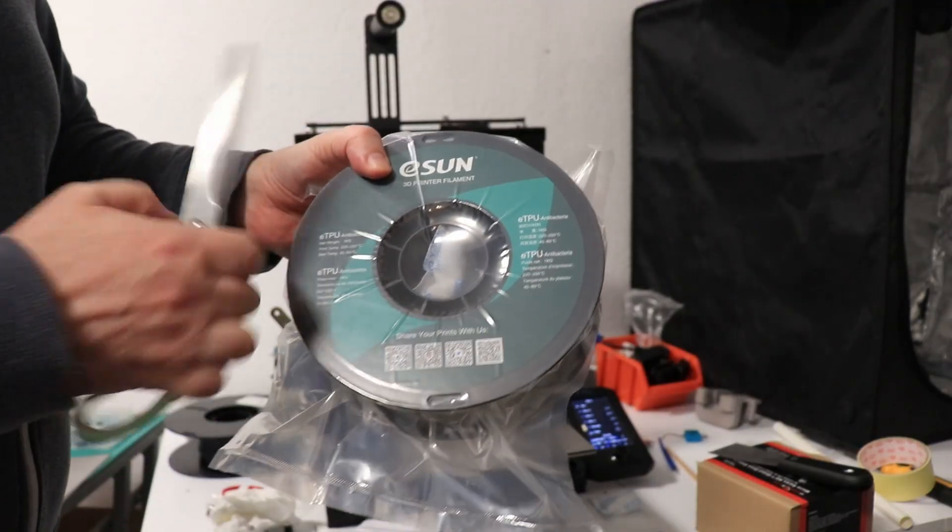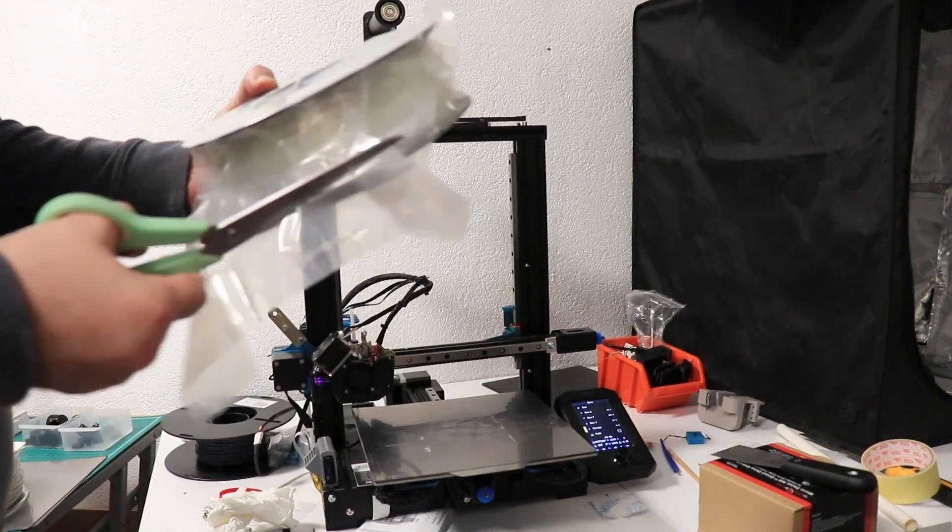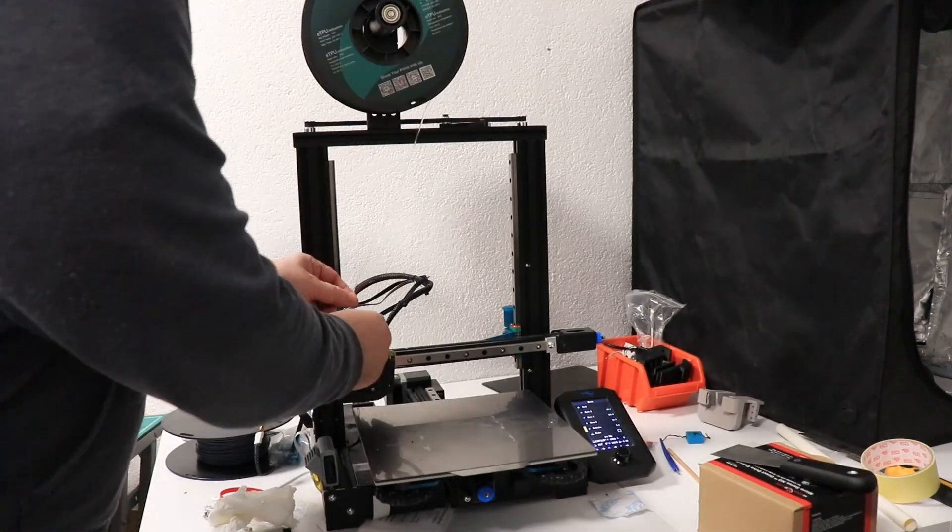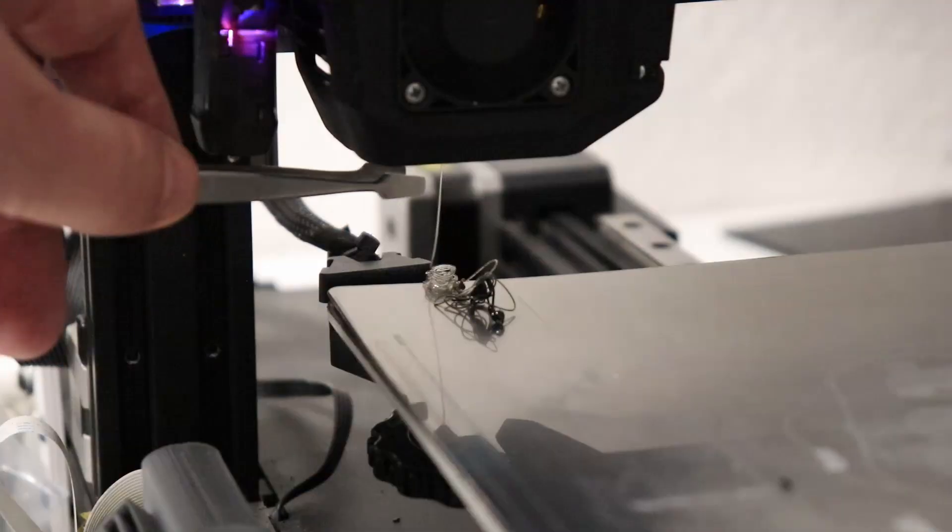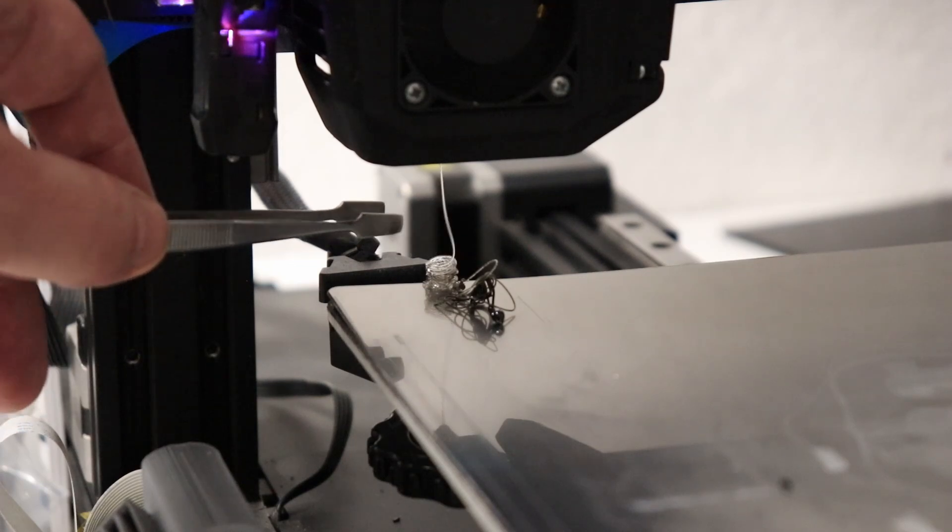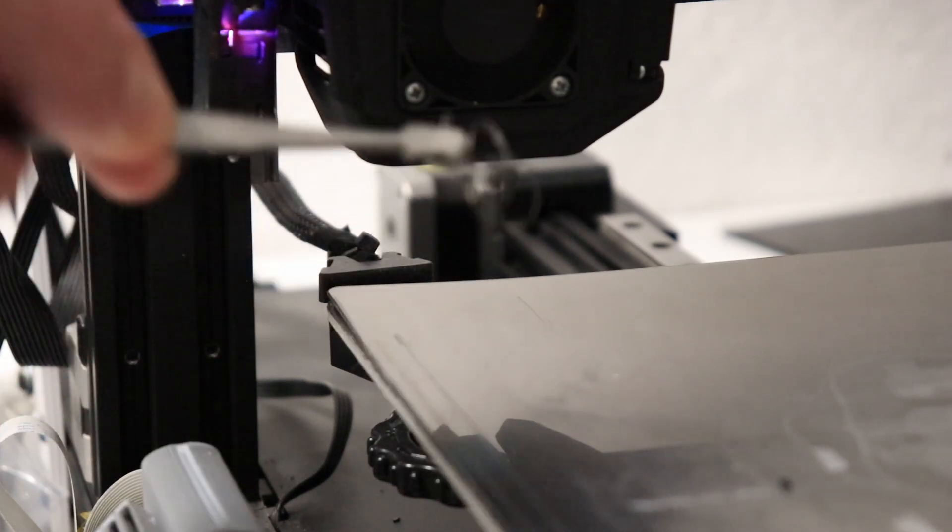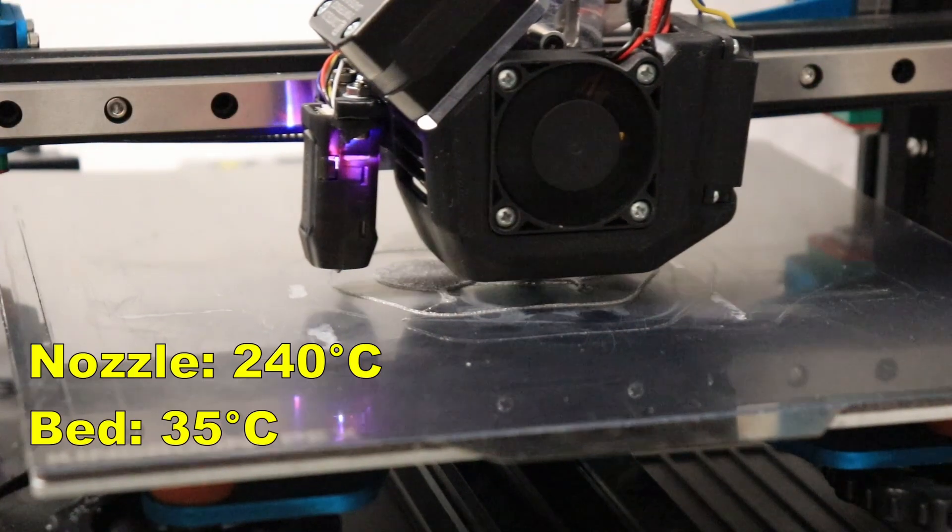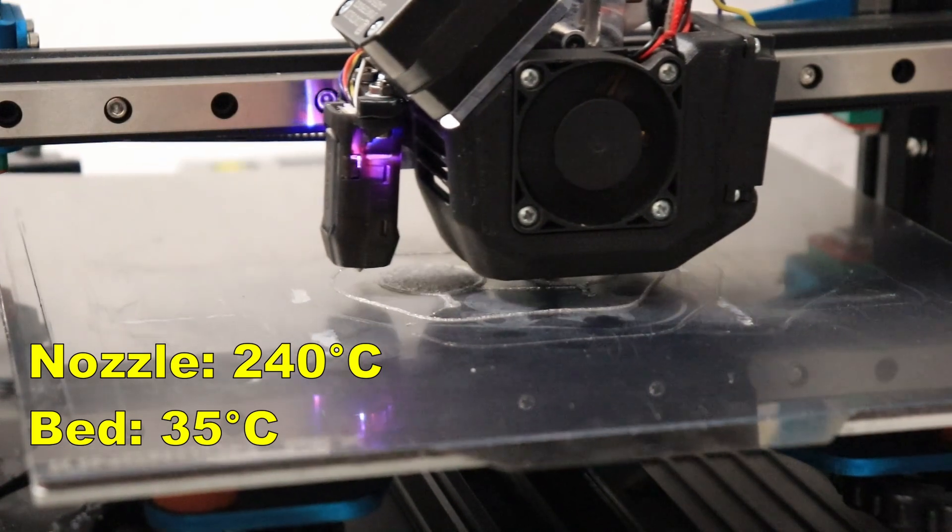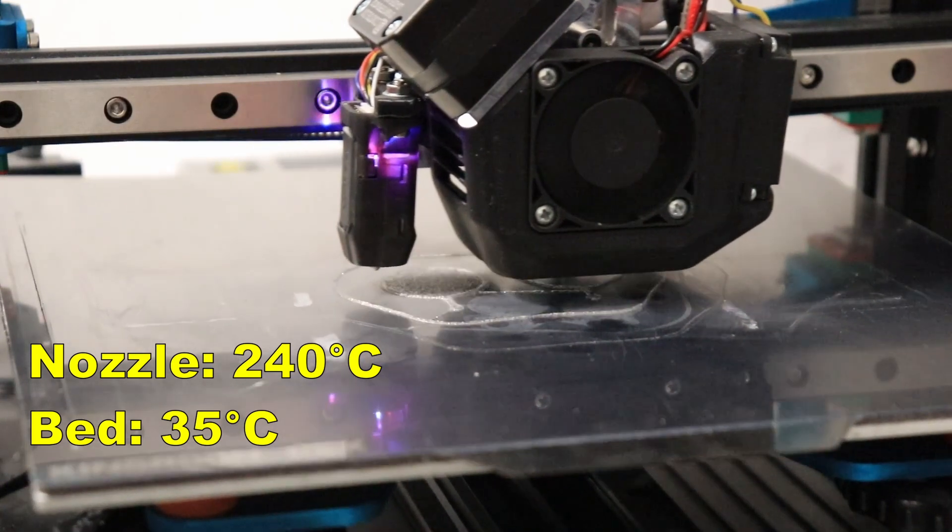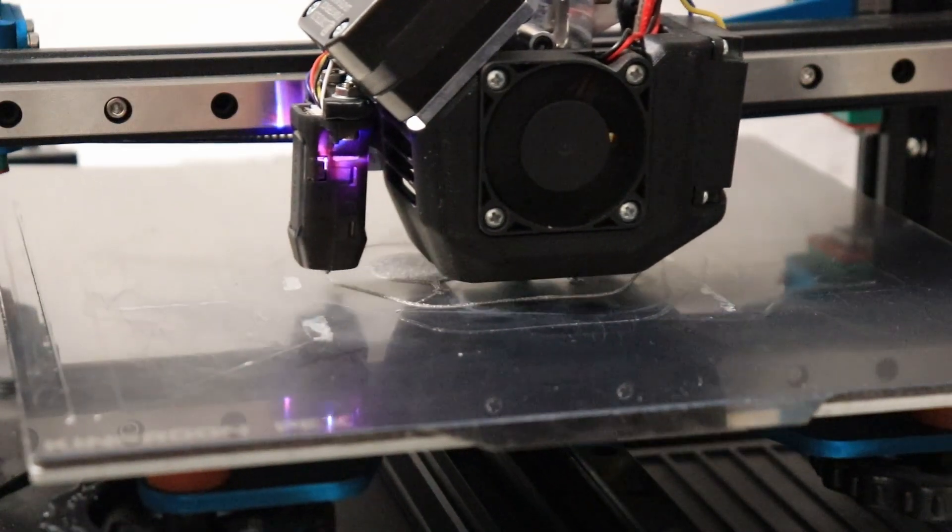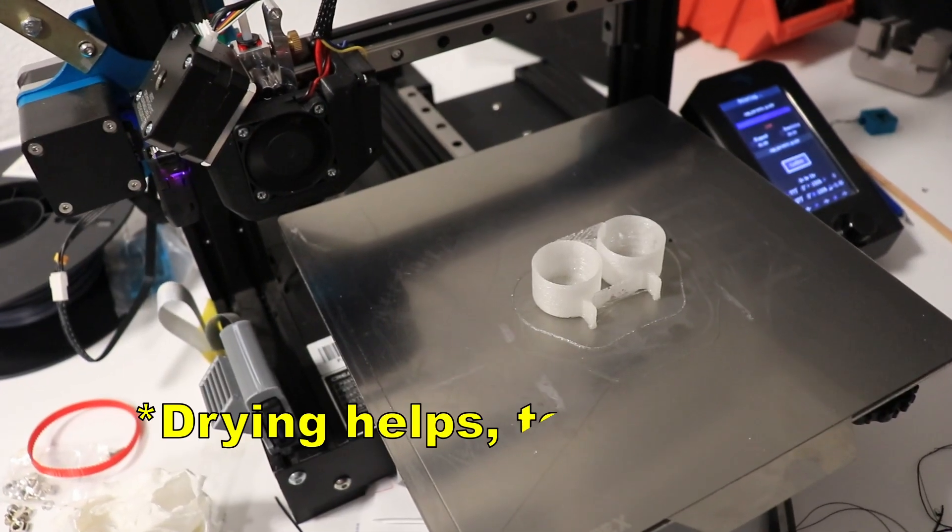And now the antibacterial filament. From black to white or natural I always need a lot of filament to clean it from the previous color. The first layer is almost finished and it looks good. I hope it will not stick too good to this PEI sheet. And it has more stringing than the regular TPU.